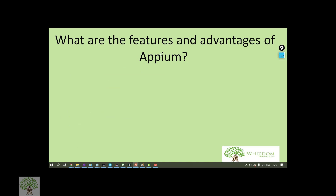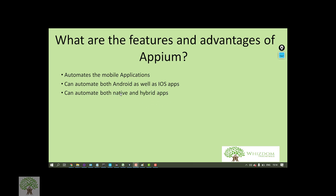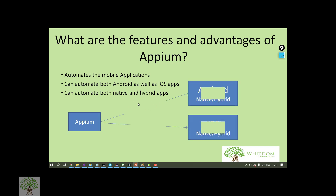What are the features and advantages of Appium? There are a number of features and advantages. Of course it is for automating mobile applications, and it can automate both Android as well as iOS applications. Along with that, it can automate both native as well as hybrid apps on Android and iOS. Another thing is it is open source — open source tools are popular in the market, most companies go for it, and it is very stable as well.